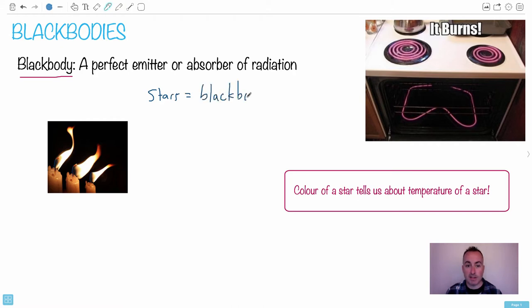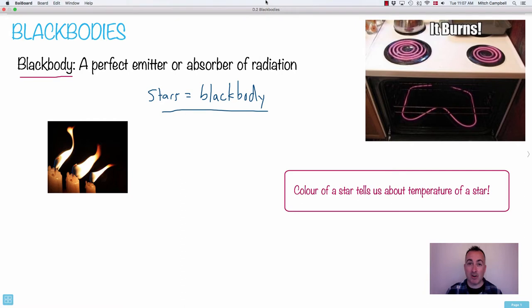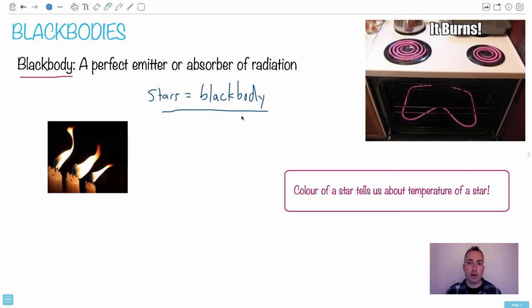So stars are also going to be black bodies. We're going to say that a star then is going to be a complete or a perfect absorber or emitter of radiation. Why do we care? What does that mean? It means we can use some of our understanding about black bodies to get an idea about what happens with stars. Remember that the hotter something is, the different its color appears.